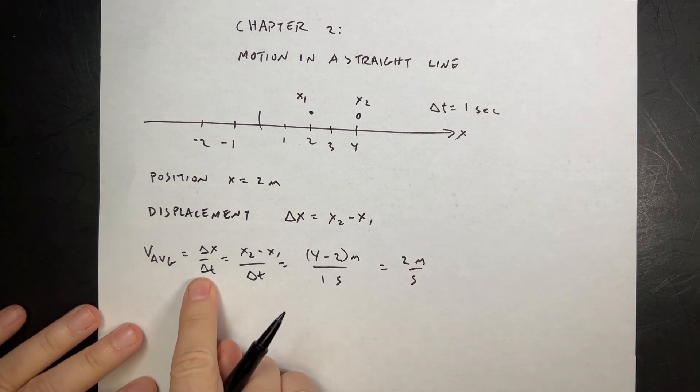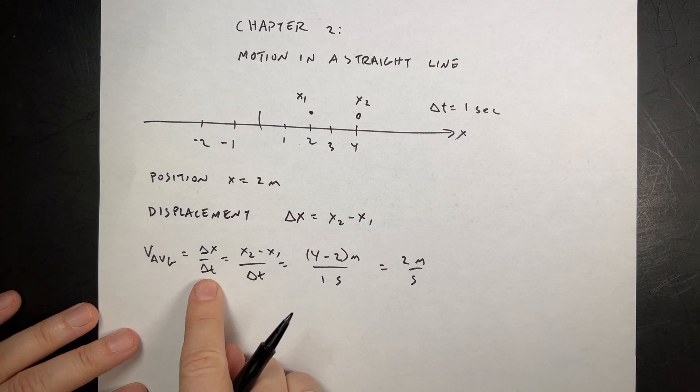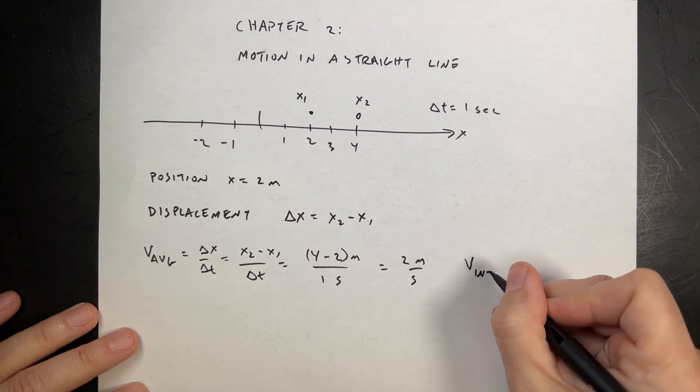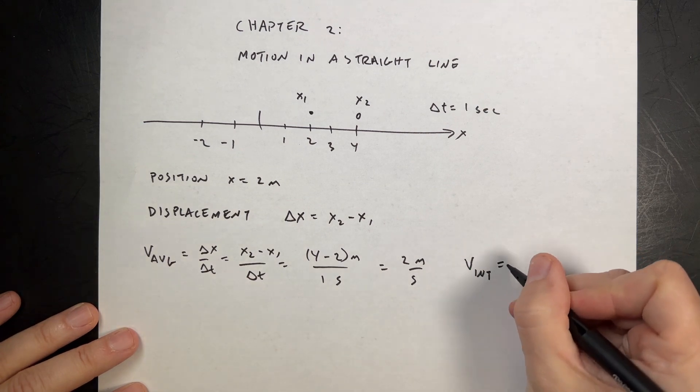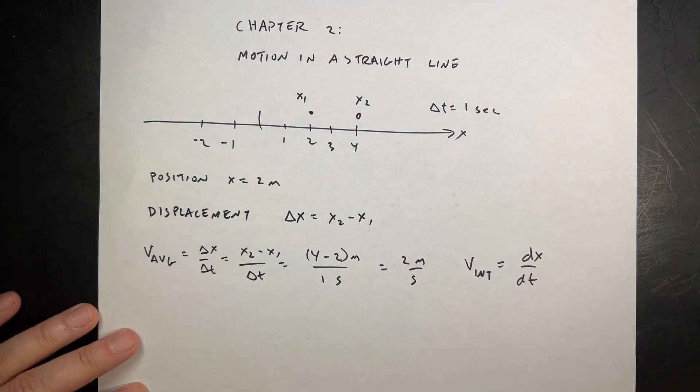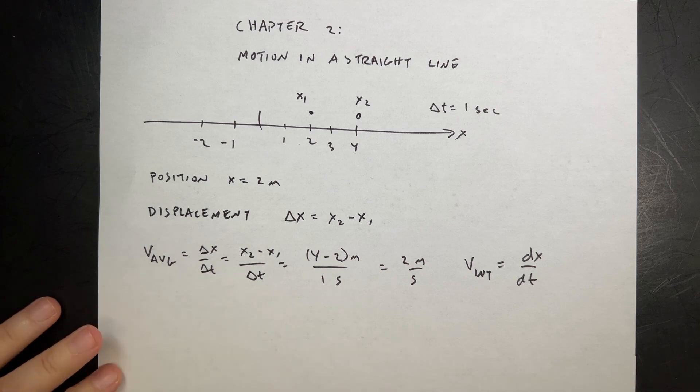You may have seen something like this before in calculus. If I take the limit as delta t goes to zero, then this actually becomes a derivative, and we call that the instantaneous velocity. It's going to be the derivative of x with respect to time. If you have a constant velocity or constant rate of change in velocity, it doesn't matter which one you use.